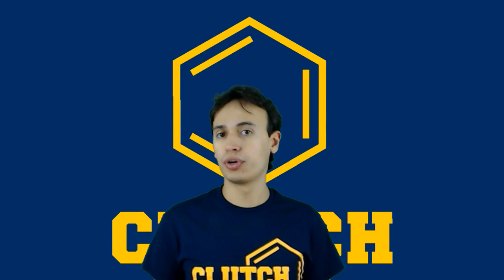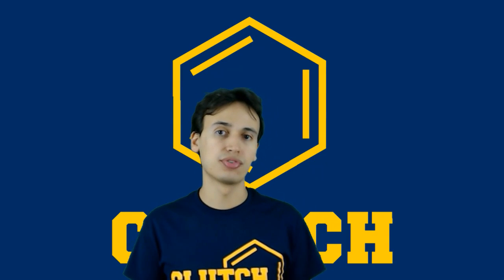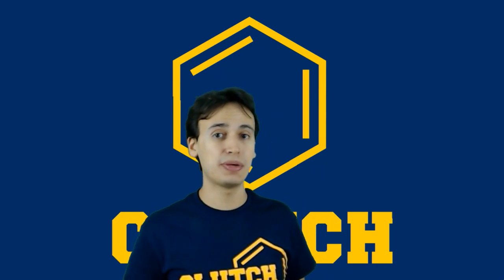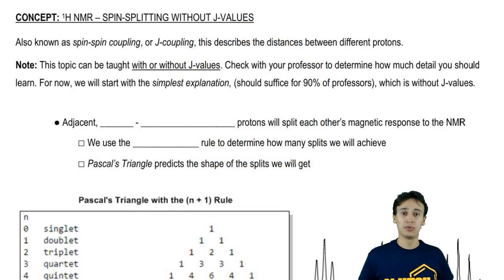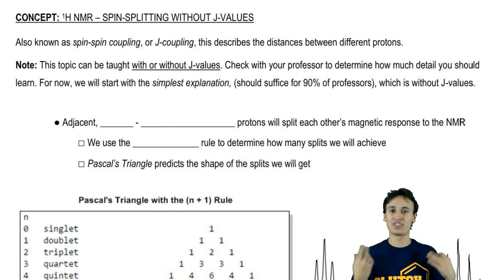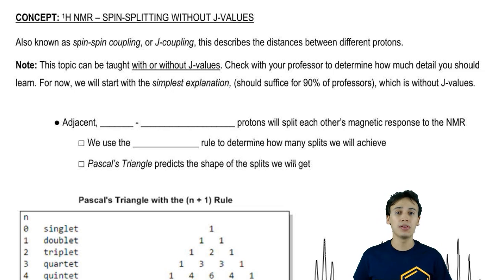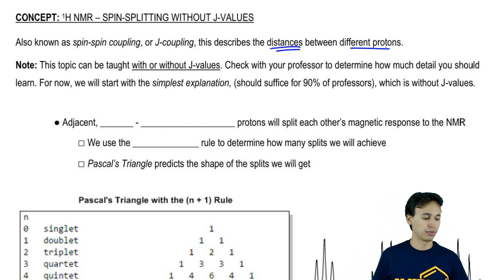Now we're going to move on to the third important piece of information that you can get from proton NMR, and that's going to be what we call spin splitting. Spin splitting has to do with the concept of neighboring protons interfering with each other, and this will reveal to us the distances between different protons.